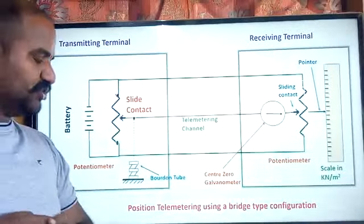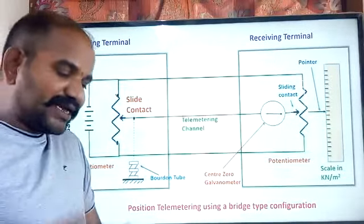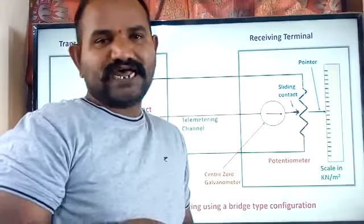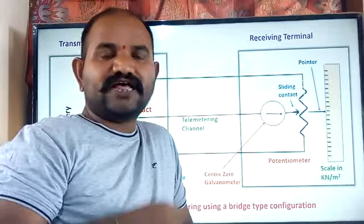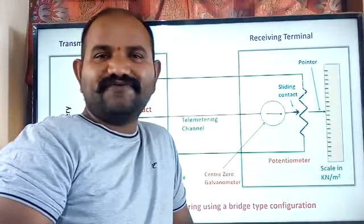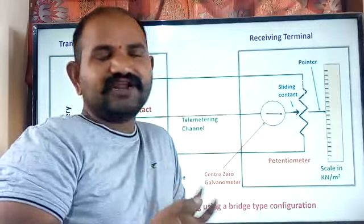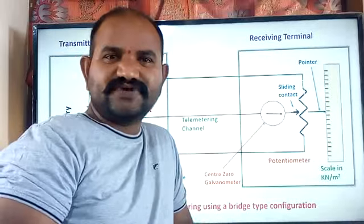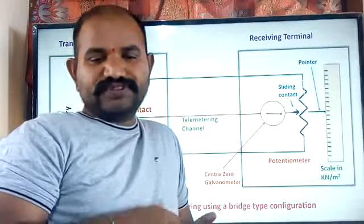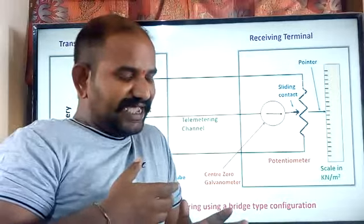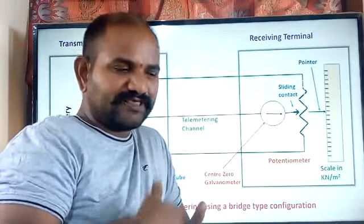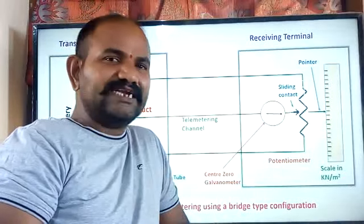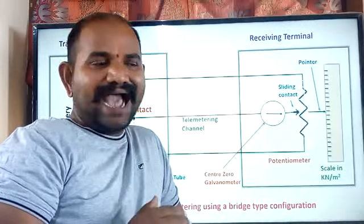This is the basic explanation of the position telemetering system. We can also construct the same position telemetering system with the help of synchro transmitter and receiver. The synchro transmitter and receiver are designed with the help of mechanical devices that work based on angular position changes — whenever there is a change in the position of the rotor.